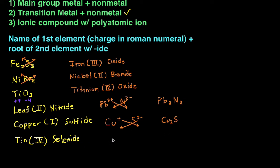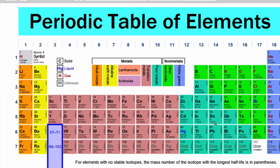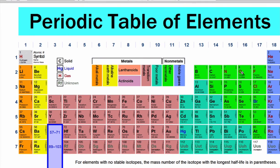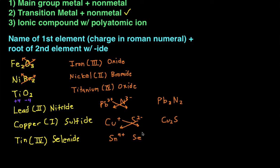And then last example. Tin selenide. Tin is Sn. So again, it's not one of the transition metals, but it acts like a transition metal because it has multiple charges. So we have Sn and it tells us it's Roman numeral 4. So that means it's positive 4 charge. And then selenide Se is right here in the same column as oxygen. So it's going to be negative 2 charge. Making sure that these two, positive 4, negative 4, don't cancel each other out. So we have to crisscross. And then when we crisscross, we get Sn2Se4.